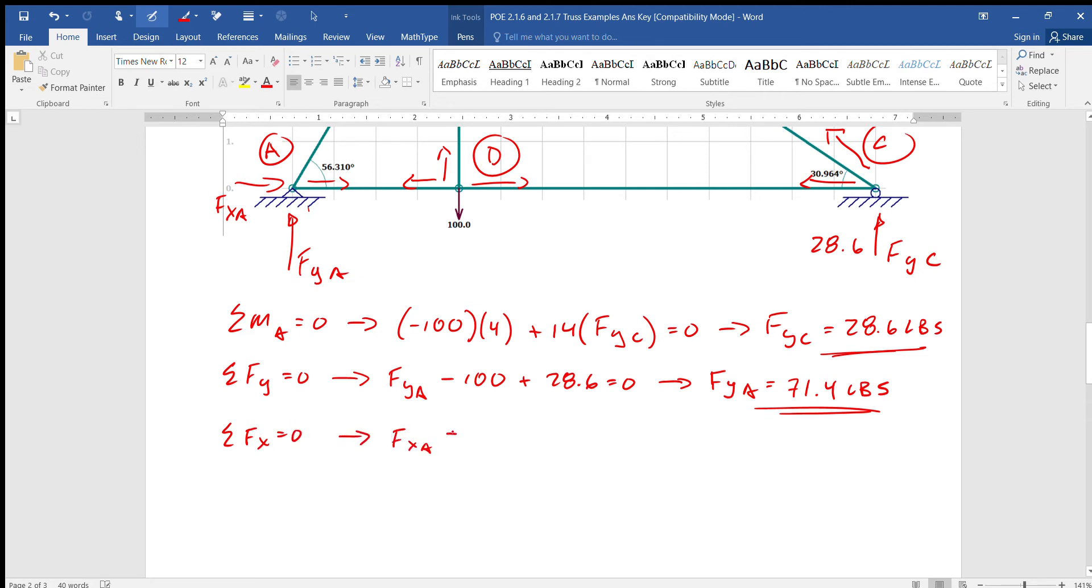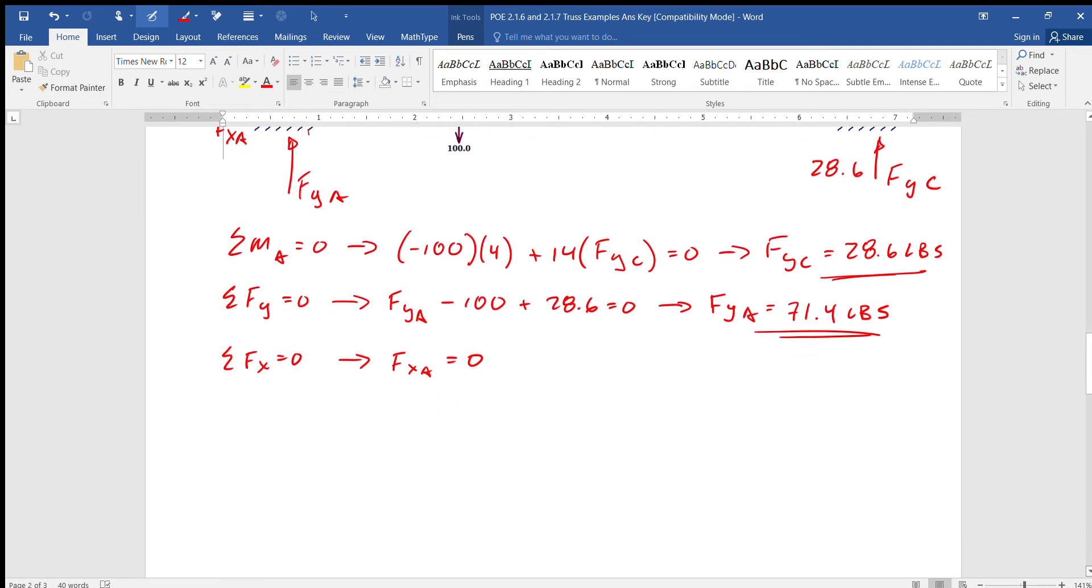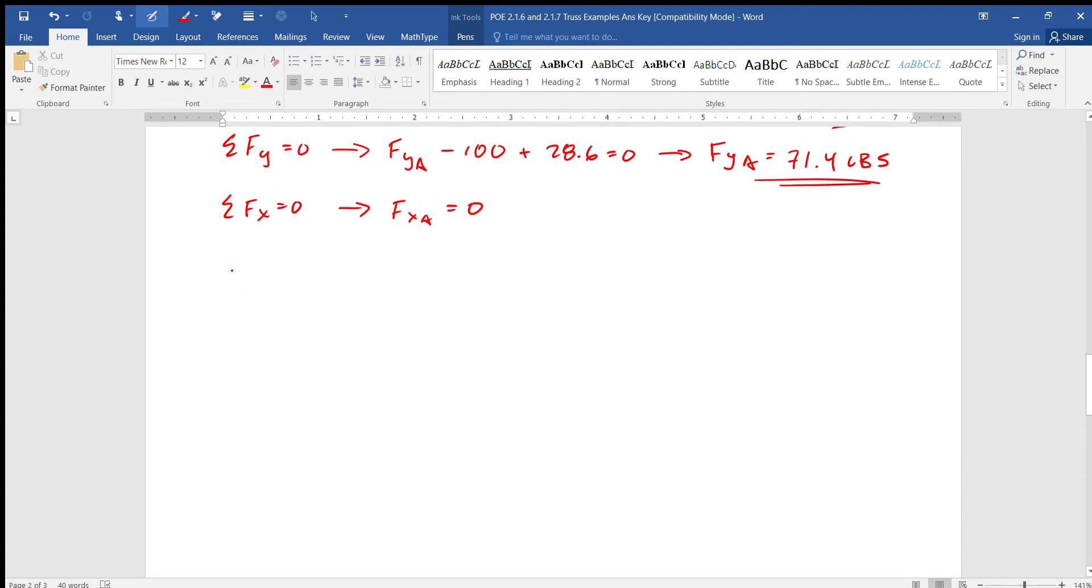All the x's have to equal zero. There are no x's at all, therefore Fxa equals zero by definition. And that's really it. So then we go to point A. Point A, why not, it's a good spot to start and we draw everything away.